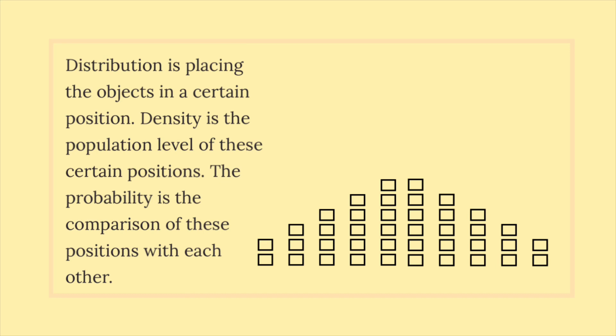Distribution is placing the objects in a certain position. Density is the population level of these certain positions. The probability is the comparison of these positions with each other.